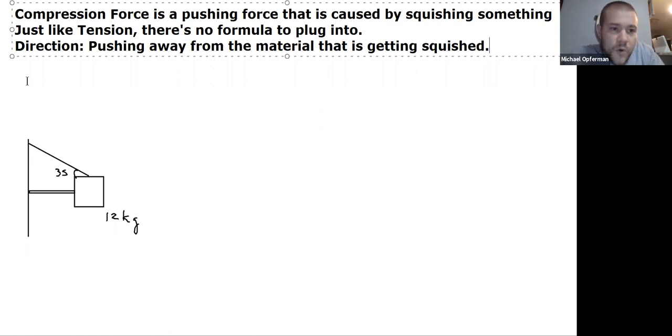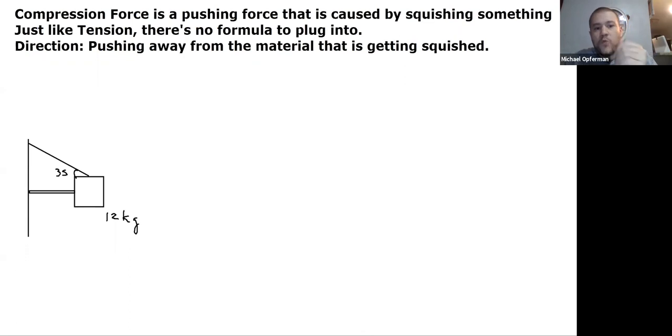So here's a simple example where I have a tension force and a compression force in the same problem. We have a block that's being held at equilibrium. There's a rope above it which is holding it upwards and tied to the wall. And then we also have a support rod over on the left and that support rod is pushing outwards. It's in compression.